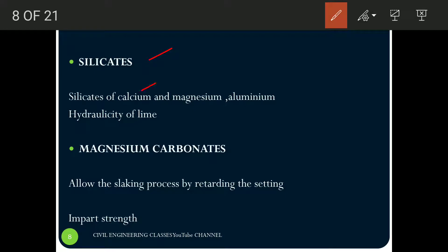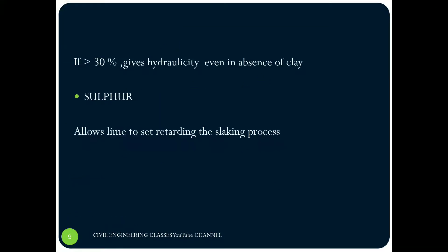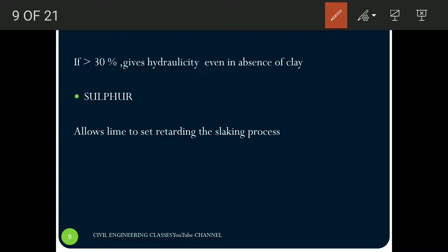That is about clay. The next ingredient is silicates. Limestone or lime contains silicates of calcium, magnesium, and aluminium, which also impart the hydraulicity property to the lime. Next is magnesium carbonate. It helps the slaking process by retarding the setting process. Magnesium carbonate allows slaking by retarding setting, and also imparts some strength to the lime. But if it is more than 30 percentage, it will lead to hydraulicity even if there is no clay.